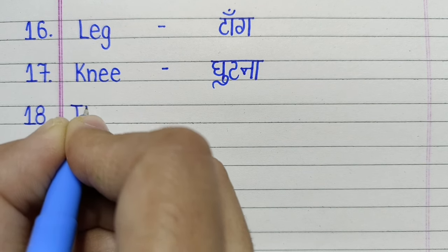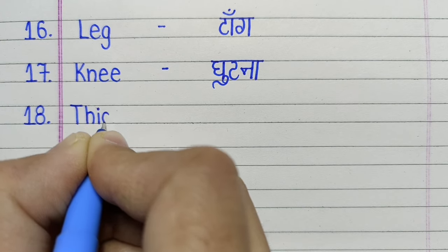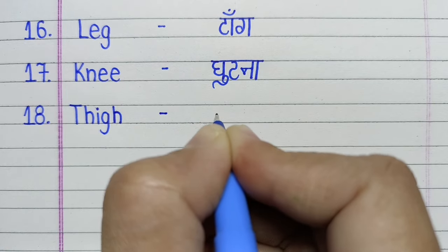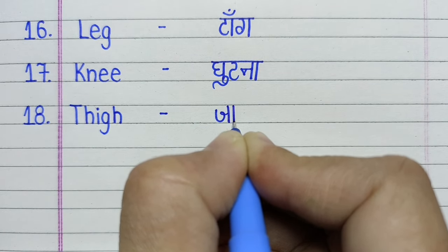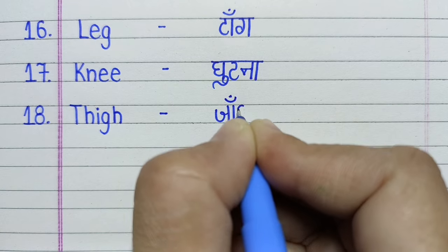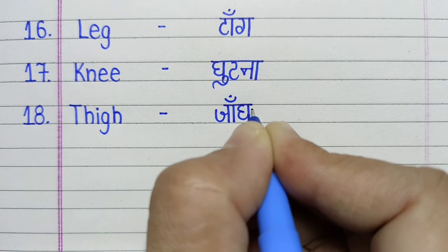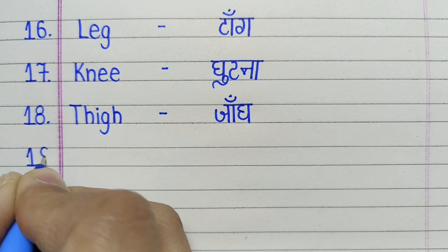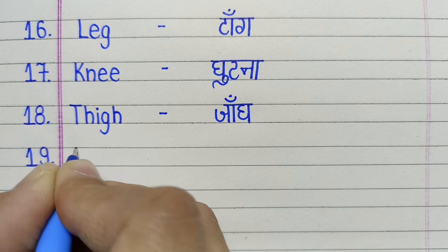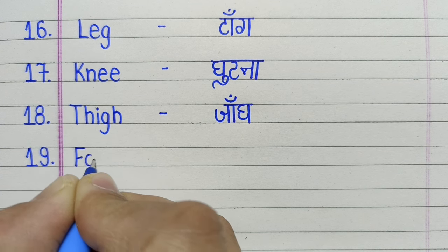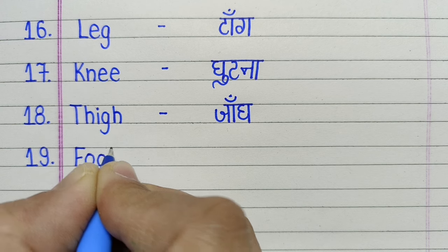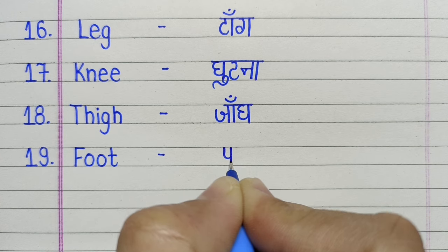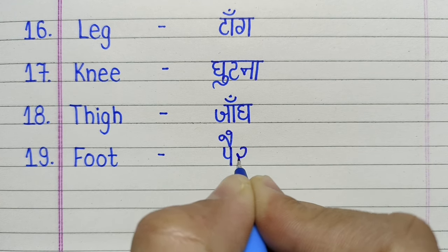T-H-I-G-H. Thigh means jang. F-O-O-T. Foot. Foot means pair.